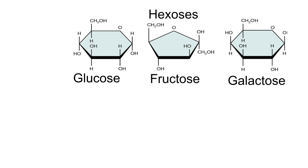There are two main types you need to be familiar with: hexoses and pentoses. Hexoses are so called because they have six carbon atoms — hex means six. The three hexoses you need to know are glucose, fructose, and galactose. Taking glucose as an example, the six carbon atoms are labeled carbon one through six.